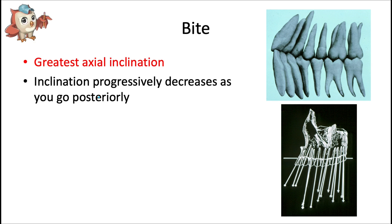The maxillary central incisor has the greatest natural axial inclination of all the teeth. Axial inclination means the crown is positioned facially relative to the root — the apex fits in the alveolar housing toward the lingual. Because crowns are wider in diameter than roots, the crowns lean outward to fit into the arch. Teeth are progressively less inclined as you go posteriorly, which you can visualize in the images.